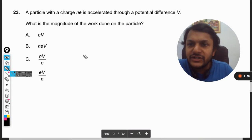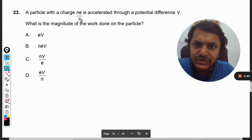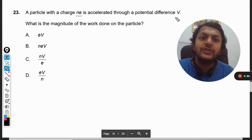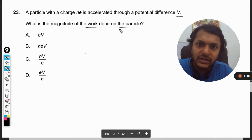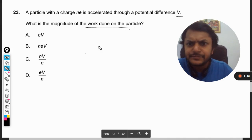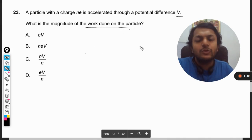In this question, a particle with charge n times e is accelerated through a potential difference V. What is the magnitude of work done on the particle?